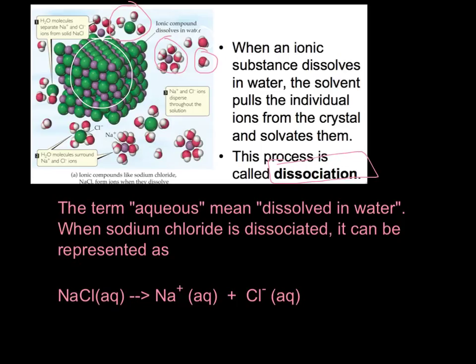When we write the term aqueous, that's what we're saying: this ionic substance is dissolved in water. So when sodium chloride dissociates, we used to have NaCl, we dissolve it in water meaning it's aqueous now, and then it becomes Na+ and Cl- while in aqueous solution.